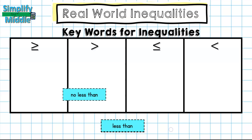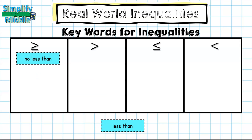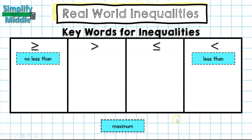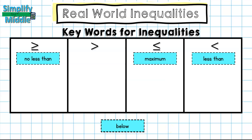The first phrase is 'no less than' — that goes in greater than or equal to, because if you have no less than a value, you could have exactly that amount but no smaller. Then we have 'less than,' which goes under the less than symbol. 'Maximum' is going to be less than or equal to.